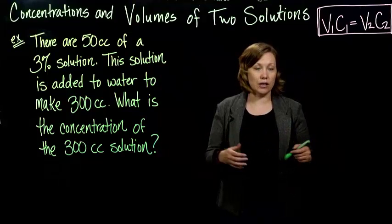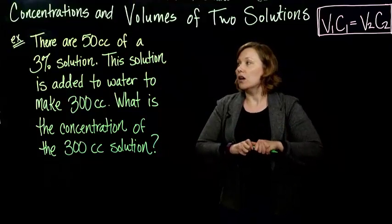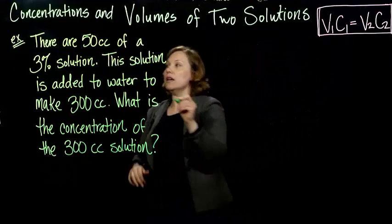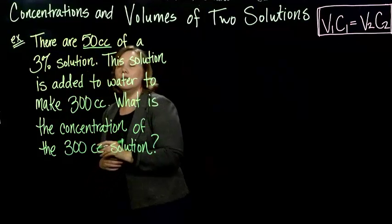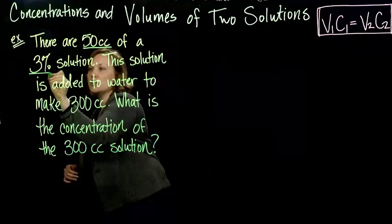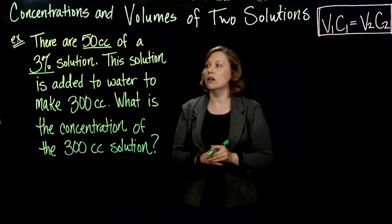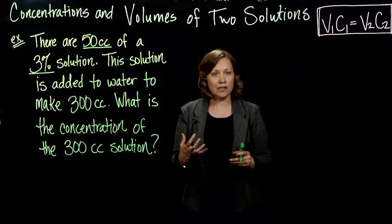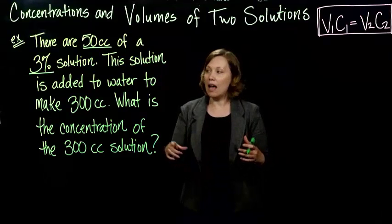We've just added water to dilute it and increase the volume. Alright, so my V1, what I'm starting with, is going to be my 50 cc's, and my concentrate that I'm starting with is 3%. So how did I know that? They told me there are 50 cc's of a 3% solution, and we're adding water.